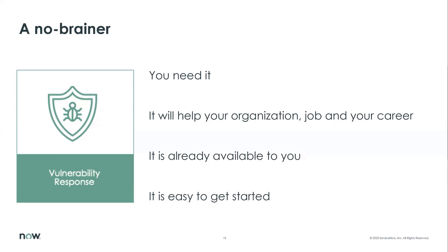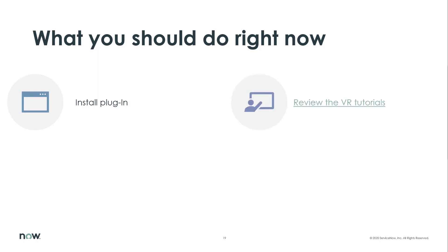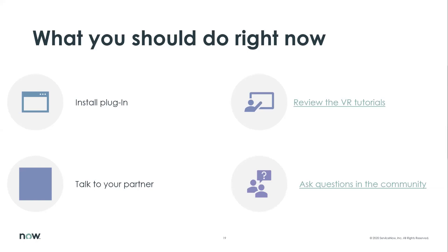Tell us what should our audience do right now. So there are a few things that they can do. First, install the plugin — follow those instructions and install the plugin and get this running in your environment. Next, go out and look at the vulnerability response tutorials available on the community. Talk to your partner. If you have a partner in place, talk to them. And if you don't, take advantage of the community and ask questions.